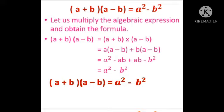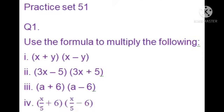Now let us solve sums related to it from Practice Set 51. Question number 1: Use the formula to multiply the following. In this question, we are given two terms in two brackets which are the same, but the sign is different. We are going to use the formula of expansion: (a + b)(a - b) = a² - b².